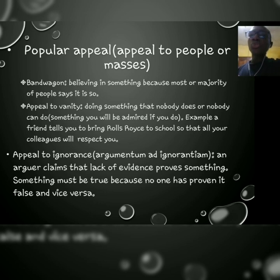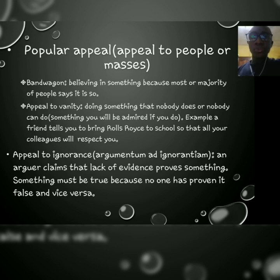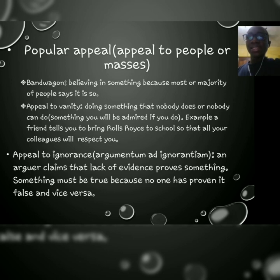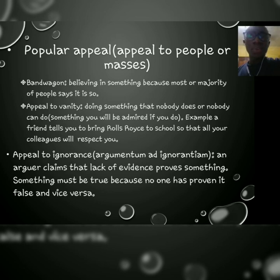Appeal to ignorance is where an arguer claims that lack of evidence proves something. The belief is that because no one has proven something to be true or false, then it must be true or false. For example, claiming there is life on Mars because no one has proven there is no life on Mars — since there is no evidence to counter the claim, the arguer says it must be true. You are appealing to something you have no facts about.